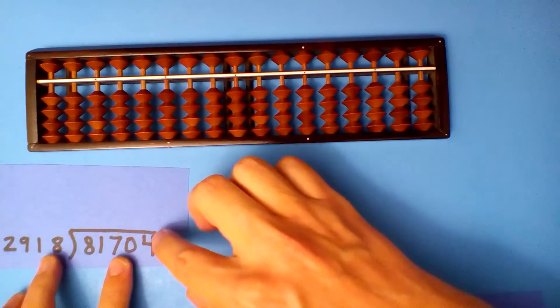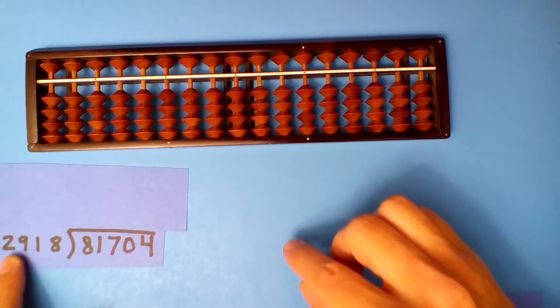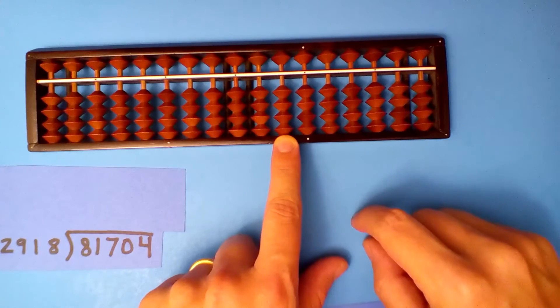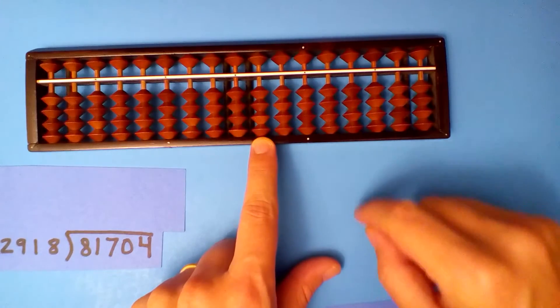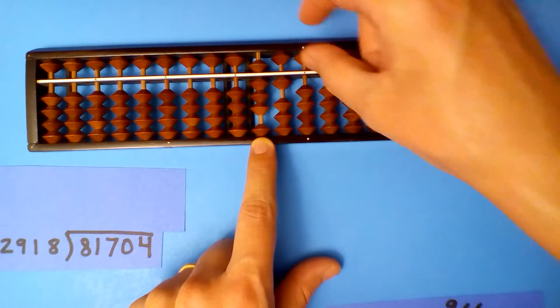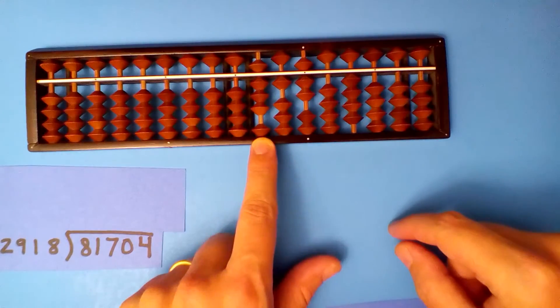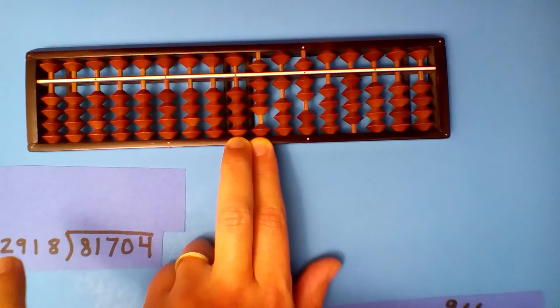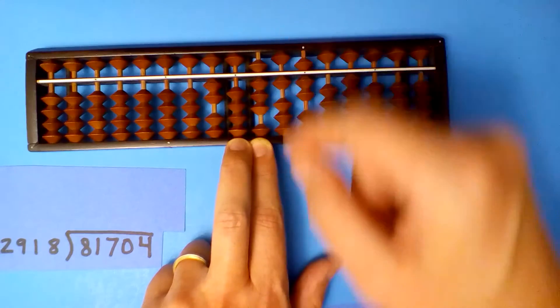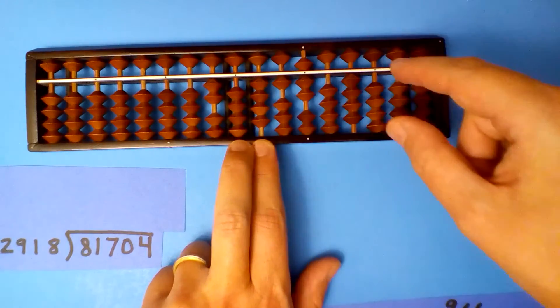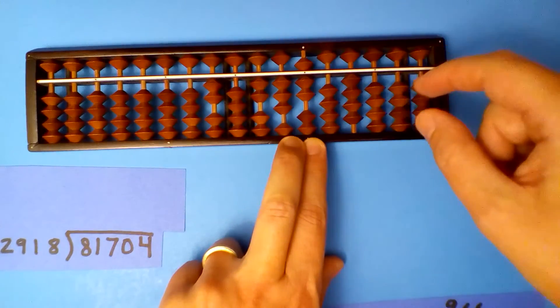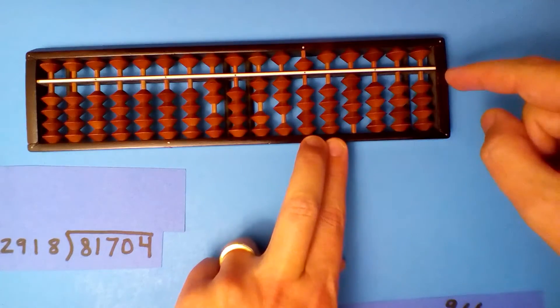One more example. What is 81,704 divided by 2,918? 5 digits versus 4 digits, so we're going to go 1 to the left. Set up our dividend: 81,704, and divide. 2 goes into 8 four times, but it's really 2.9, isn't it? So I think just twice. 2 times 2 is 4, 2 times 9 is 18, 2 times 1 is 2, and 2 times 8 is 16.